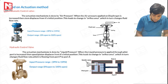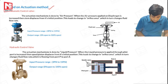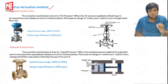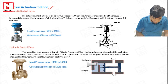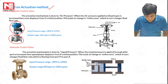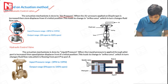Now let's see the actuation method. Before understanding actuation, you need to know what actuation means. If you take any control valve, the upper portion is called the actuation setup or actuation part where the actuation mechanism is performed, and the lower part is called the valve body. In a pneumatic control valve, the actuation mechanism is performed by air pressure.